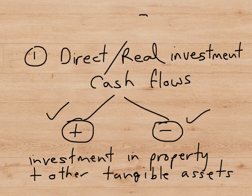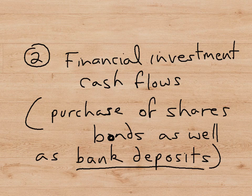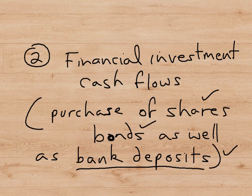The next section of the financial account deals with financial investment, such as the purchase of shares, bonds, and bank deposits. This is affected by flows of hot money in the short run, because as money comes into the UK attracted by higher interest rates, it is often put into banks or used to buy shares or bonds. So flows of hot money in and out of the country are reflected in this part of the financial account.